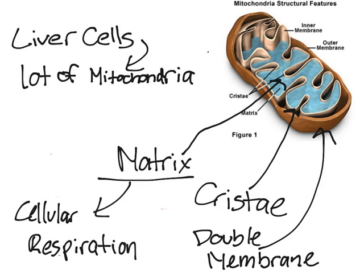And the matrix, I mean, the cristae, also helps in making energy because the electron transport chain is located on the cristae. But we'll get into that when we talk about cellular respiration and how energy is made.